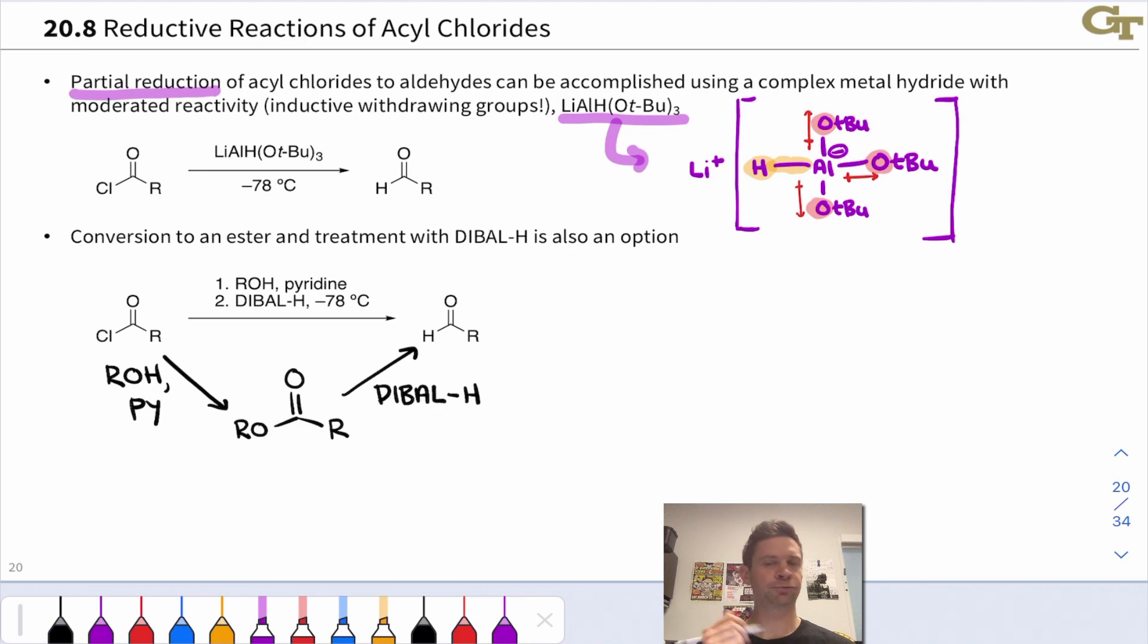DIBAL-H is less reactive than lithium aluminum hydride. It's actually neutral with a neutral aluminum-H bond and that H is still quite nucleophilic but it's not so nucleophilic that at low temperatures in particular it reduces the aldehyde all the way to a primary alcohol. At low temperatures with DIBAL-H you can achieve partial reduction to the aldehyde and stop there.